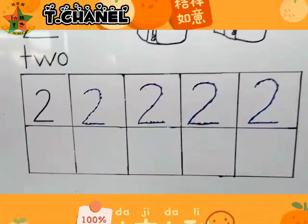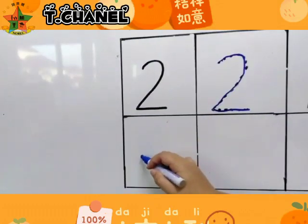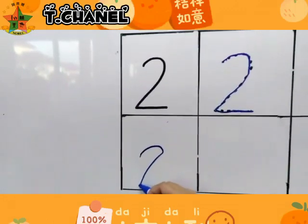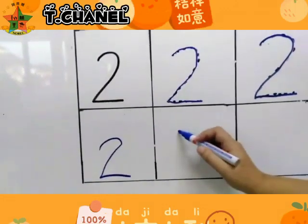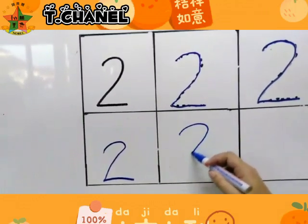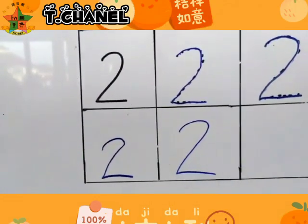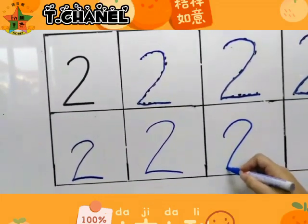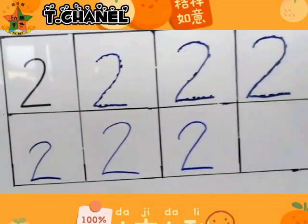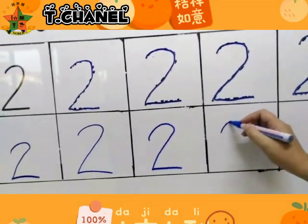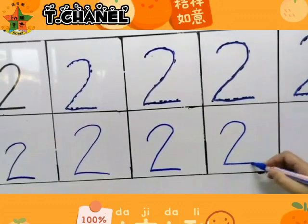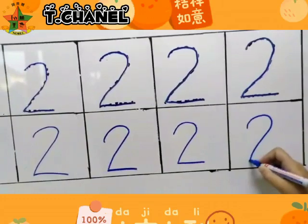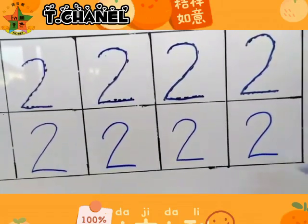Okay children, let's do free writing. Make a curve, slide down, go to the right. Make a curve, slide down, go to the right. Make a curve, slide down, go to the right. Make a curve, slide down, go to the right.